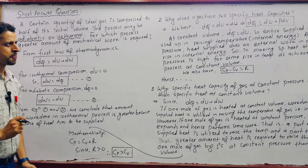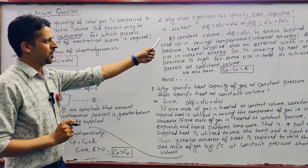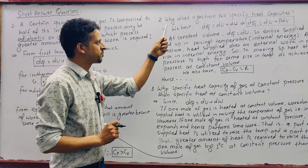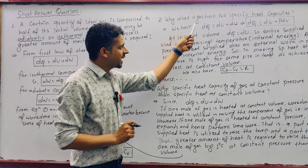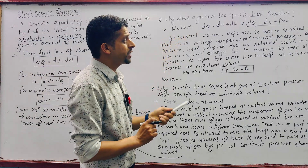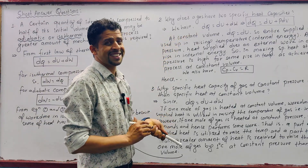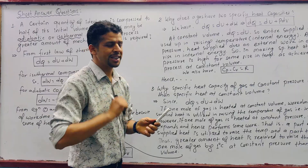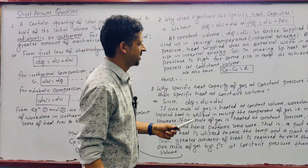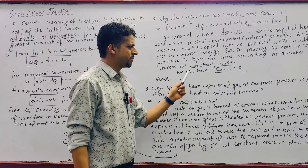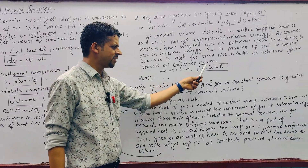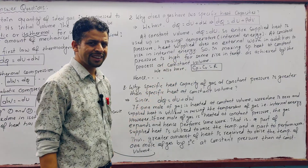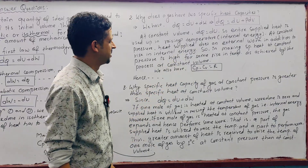Next important short answer question: Why does a gas have two specific heat capacities — specific heat capacity at constant pressure and specific heat capacity at constant volume?